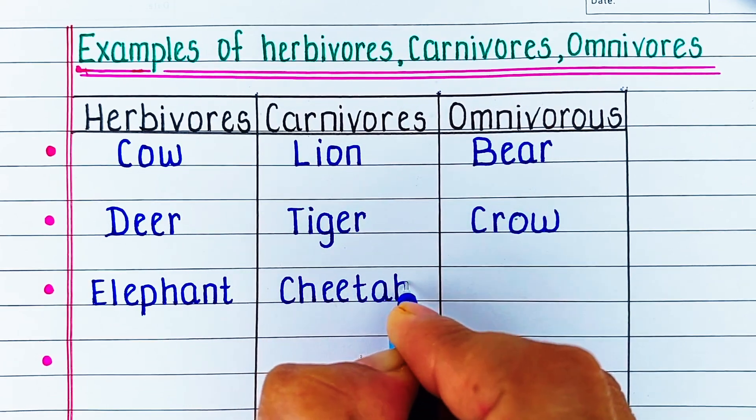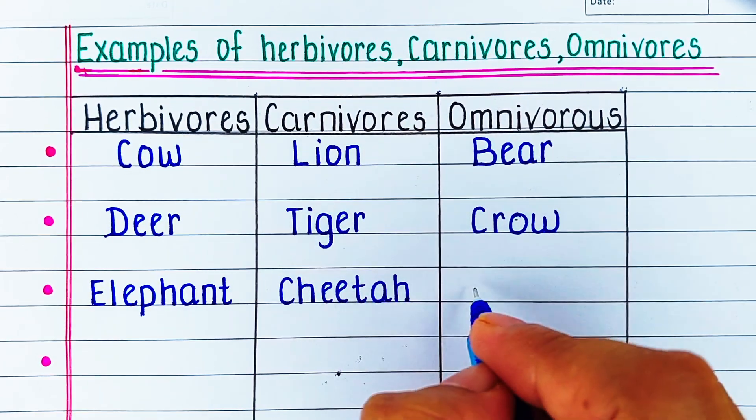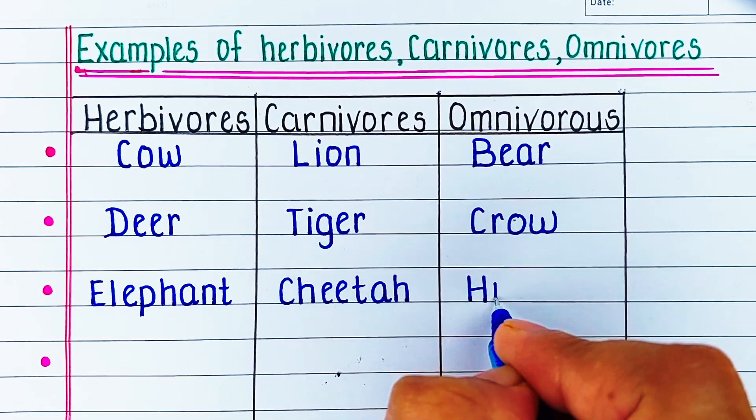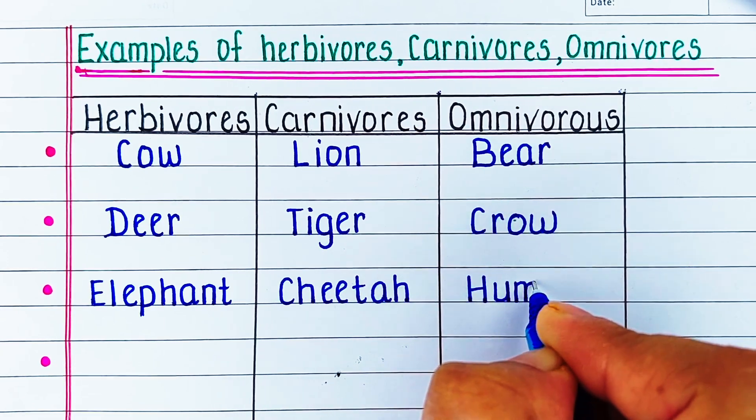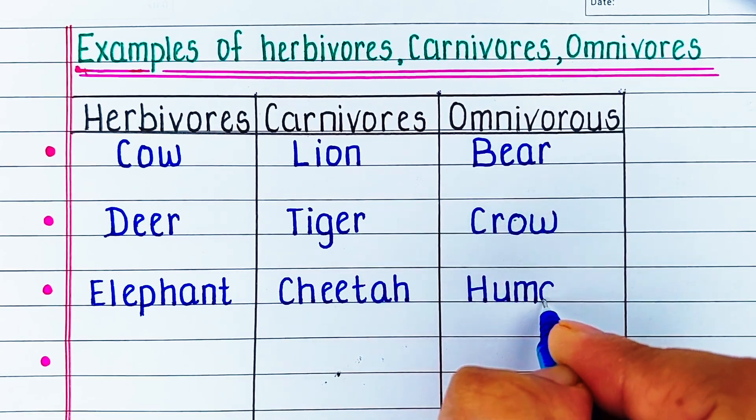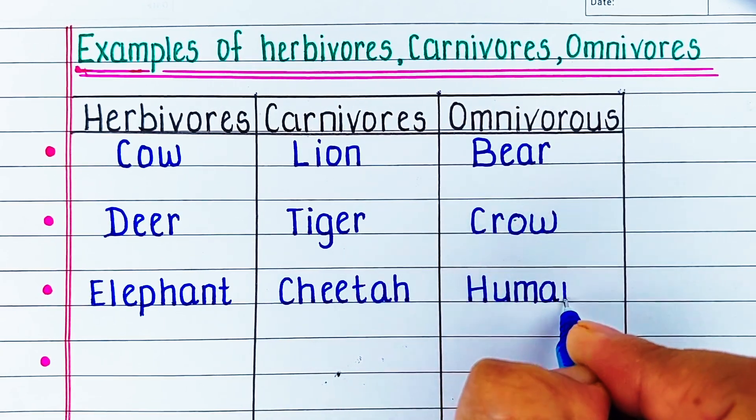Next herbivore is elephant. Carnivore is cheetah. And omnivore is we the humans.